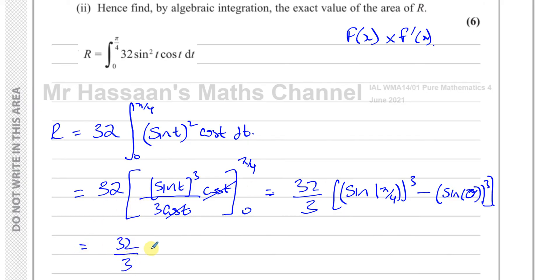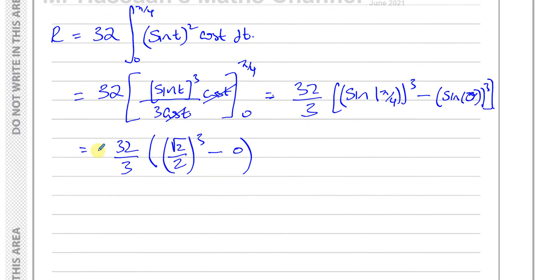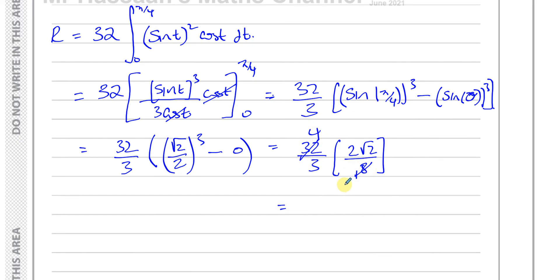This gives 32 over 3 times (sine(pi over 4) cubed minus sine(0) cubed). The sine of pi over 4 is root 2 over 2, and sine 0 is 0. Cubing root 2 over 2 gives 2 root 2 over 8. Since 8 goes into 32 four times, we get 4 times 2 root 2 over 3, which is 8 root 2 over 3. That's the exact area of R.